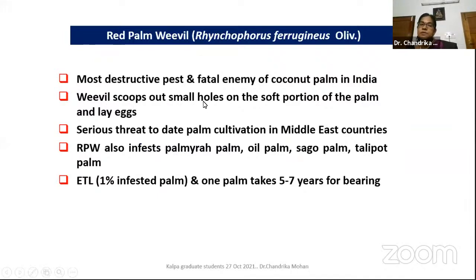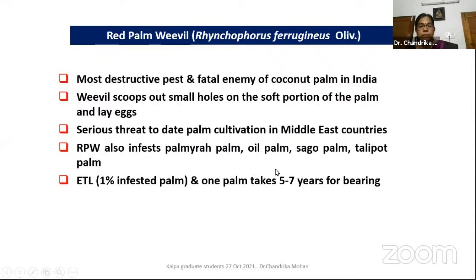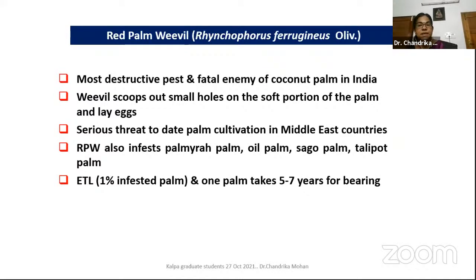The weevil scoops out small holes on the soft portion of the palm and lays eggs. It is a serious threat to date palm cultivation in Middle East countries and is also a major pest of oil palm, pomera palm, sago, talipot palm, and many other palm species. Very recently, we have seen damage by red palm weevil to areca nut also. Most importantly, this pest is the fatal enemy of coconut — no other pest can kill the palm, but red palm weevil can.